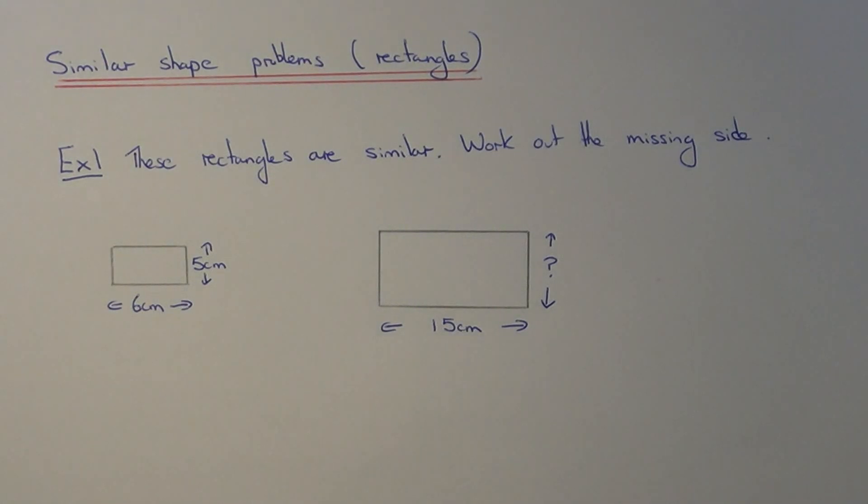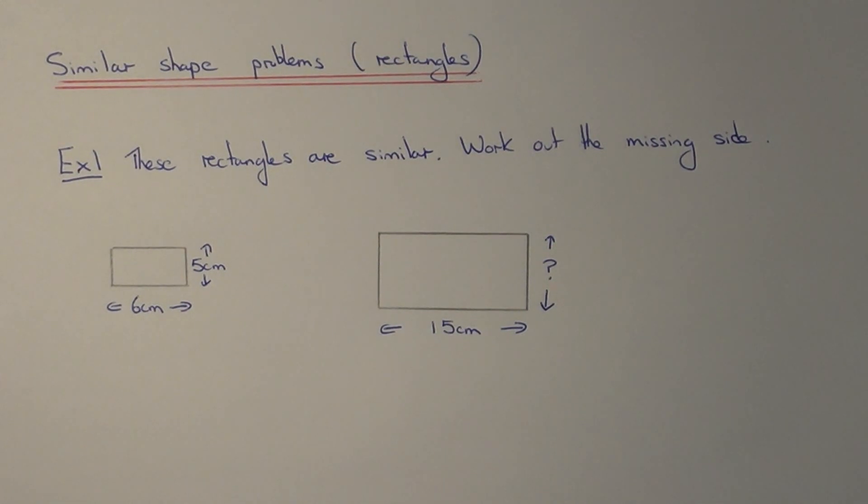So let's have a look at example one. We've got two similar rectangles and we need to work out the width of the larger rectangle. So the first step then will be to work out the scale factor of the enlargement.